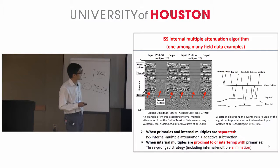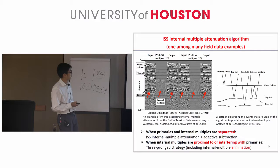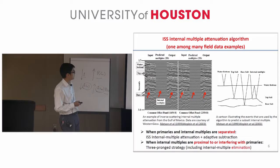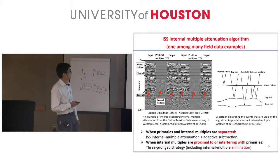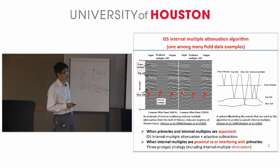And yet there is a concern with the adaptive subtraction. Because when internal multiples are proximal to or interfering with the primary, the criterion of energy minimization of adaptive subtraction can fail. So in order to reduce this concern and provide assurance that the primary is not touched, we need an internal multiple elimination algorithm which can predict both correct times and correct amplitude of the internal multiples.